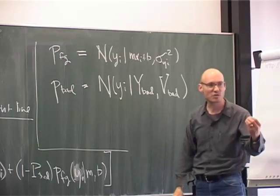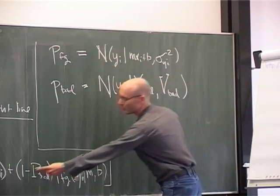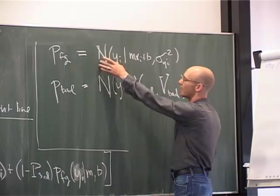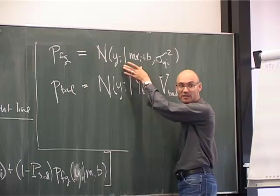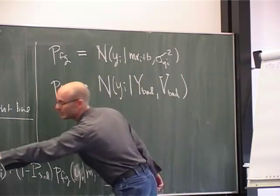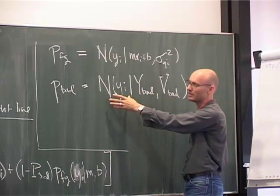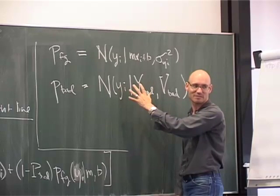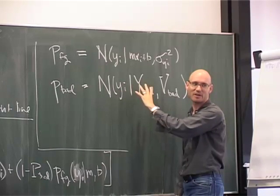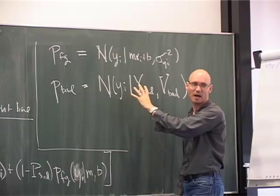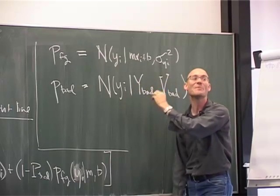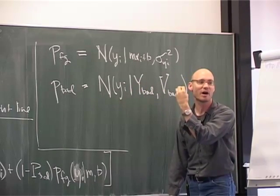Right, so what I'm doing is I'm assuming that a fraction of the points are drawn from exactly the model we expect, but then the other fraction, P bad, are being drawn from some outlier distribution, which is just the bad points. And I don't care very much about this model. I'm just writing something down so that I can model them.